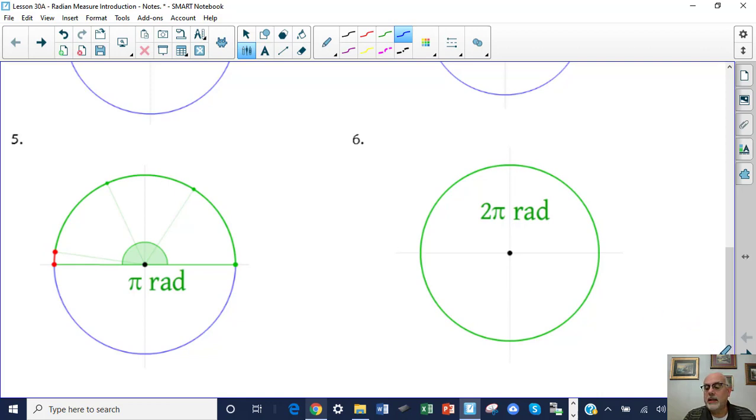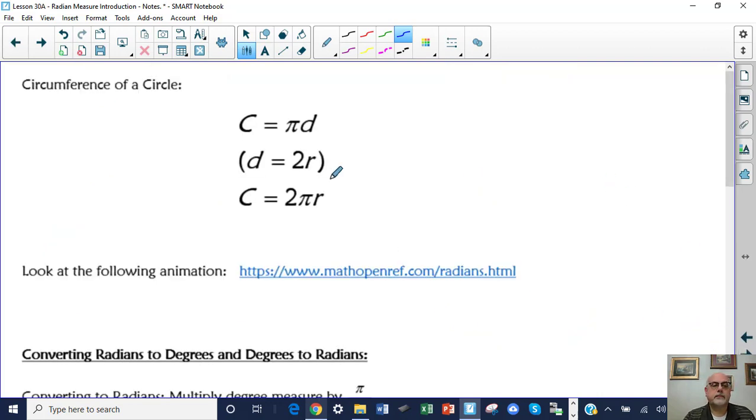So let's see why that is. If I look at this, the formula for the circumference of a circle is pi times diameter. We also know though that diameter is twice the radius. So the circumference is really two times the radius times pi, or two pi r, which is why there are two pi radians around the circumference of a circle.